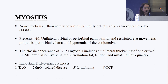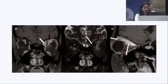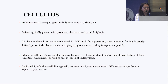Myositis is a non-infectious inflammatory condition affecting the extraocular muscles, presenting with mostly unilateral orbital or periorbital pain, painful and restricted extraocular movements, proptosis, edema, and hyperemia of the conjunctiva. Important differentials for myositis include TAO, IgG4-related disease, lymphoma, and carotid-cavernous fistulas. Imaging shows involvement of the superior and medial rectus muscles.